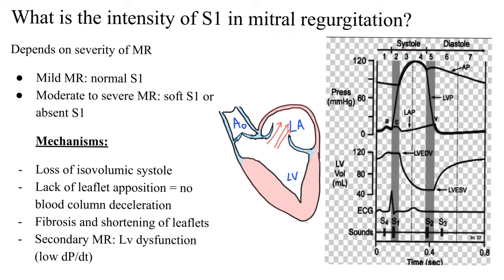The answer is that it depends on the severity of MR. If the MR is mild, then S1 would be normal in intensity. However, if the MR is moderate to severe, or anything more than moderate MR essentially, it would lead to a soft S1 or an absent S1.